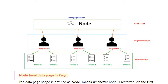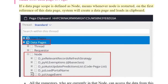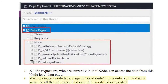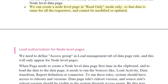Node level data page in PEGA: If a data page scope is defined as node, whenever the node is restarted, on the first reference of this data page the system will create a data page and load it in the clipboard. All the requesters currently on that node can access the data from this node level data page. We can create a node level page in read only mode only, so that the data is the same for all requesters and cannot be modified or updated.